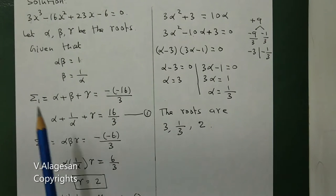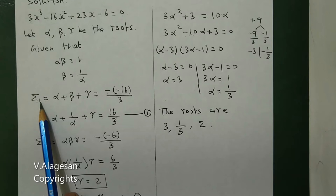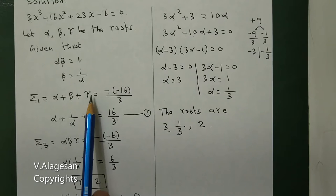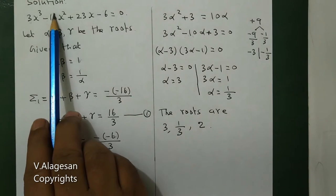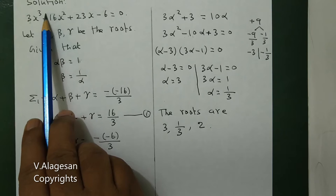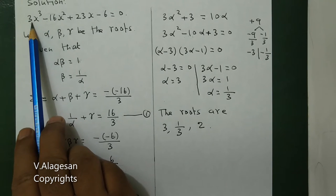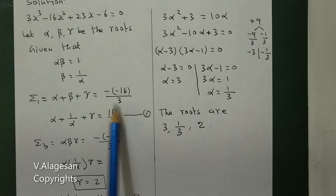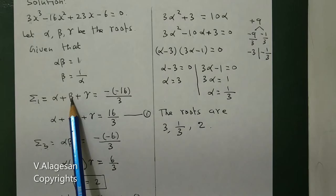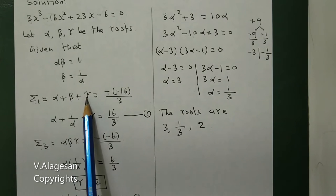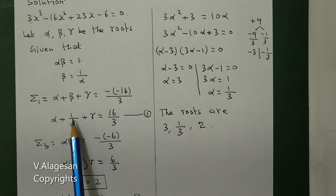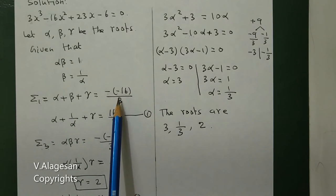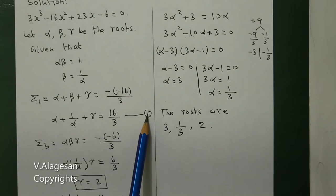Next, we have to find summation 1, which is the sum of the 3 roots. Alpha plus beta plus gamma equals summation 1. The formula is minus coefficient of x squared divided by coefficient of x cubed, which gives minus of minus 16 by 3. So alpha plus 1 by alpha plus gamma equals 16 by 3. This is equation 1.